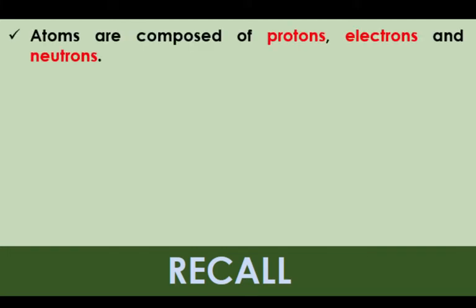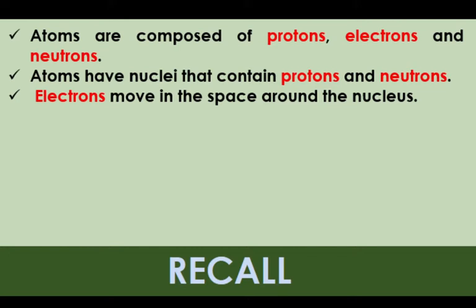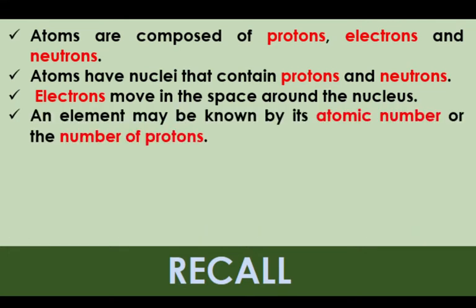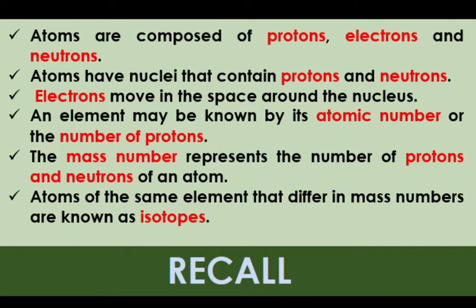But before we proceed, let's have a recall of what we discussed in the previous video lesson. You learned that atoms are composed of subatomic particles — protons, electrons, and neutrons. Atoms have nuclei that contain protons and neutrons, and electrons move in the space around the nucleus. An element may be known by its atomic number, or the number of protons, and the mass number represents the number of protons and neutrons. Atoms of the same element that differ in mass numbers are known as isotopes.